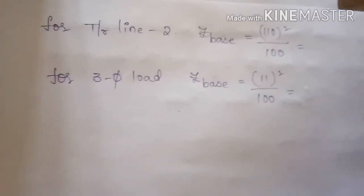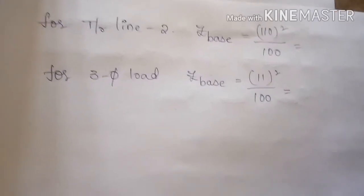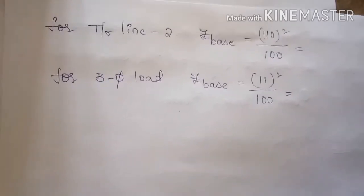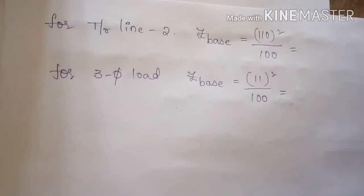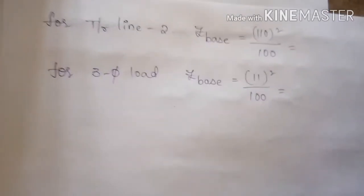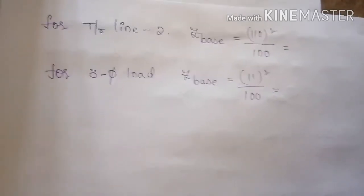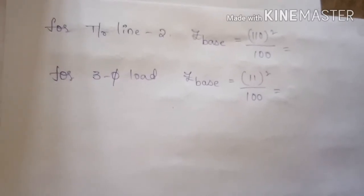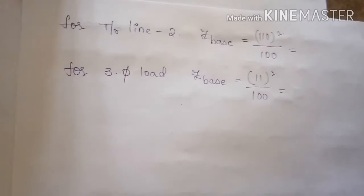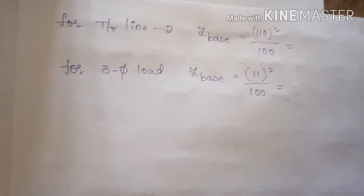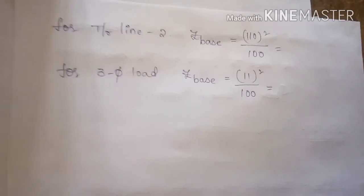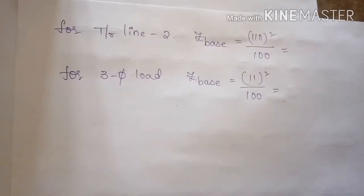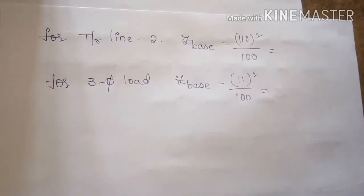For transmission line two, Z base is calculated using formula (kV base)² / S base, where V base 3 is 110 kV. Substituting gives Z base for transmission line two. Similarly for three-phase load, kV base 4 is 11 kV, so Z base = (11)² / 100, giving the base impedance for the three-phase load.